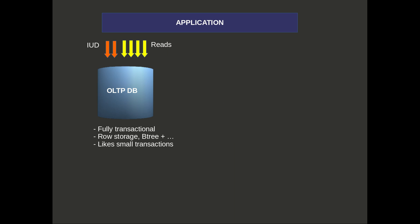Here I've got an application and it's talking to an OLTP database. The orange arrows represent insert, update, delete requests and the yellow arrows represent read requests. We're going against our OLTP database which is fully transactional, row storage with B-trees plus bitmap indexes and maybe some inverted indexes, and generally small transactions.